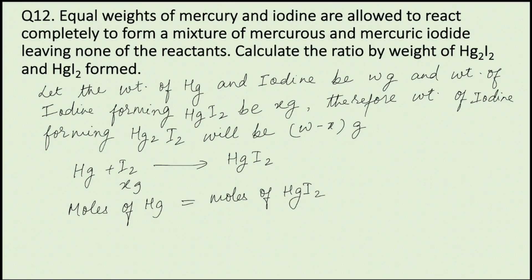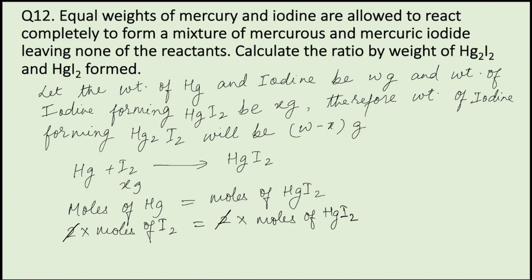Because on the reactant side, one mole of mercury contains one mole of mercury atoms, and on the product side, one mole of HgI₂ contains one mole of mercury atoms. Applying principle of atom conservation on iodine: 2 into moles of iodine equals 2 into moles of HgI₂. The 2s cancel, so moles of iodine equals moles of HgI₂.